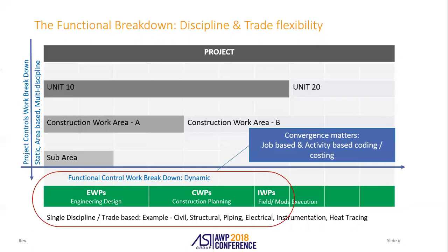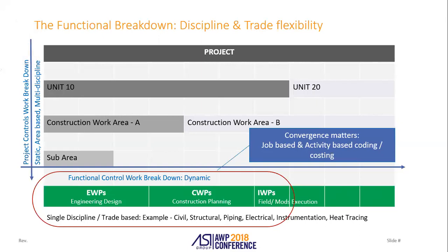A lot of projects look at things done by work breakdown structures — a project in a different unit — but much of that is based on the concept of multiple disciplines. In AWP we really want to make sure it's job-based and single discipline. Everything you think of in AWP is normally by single discipline.